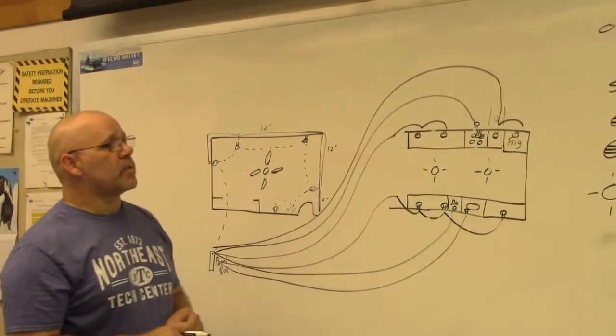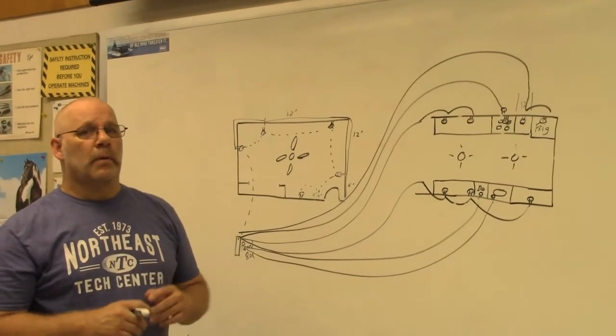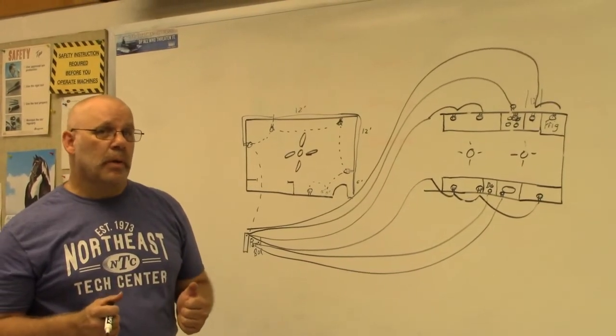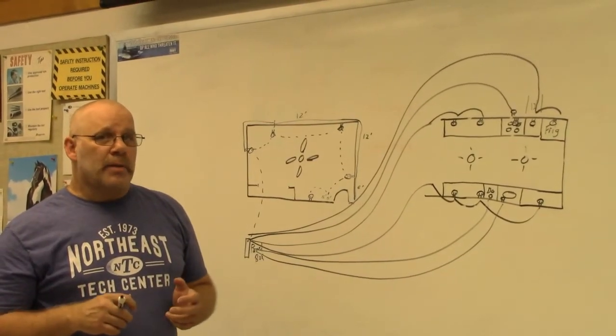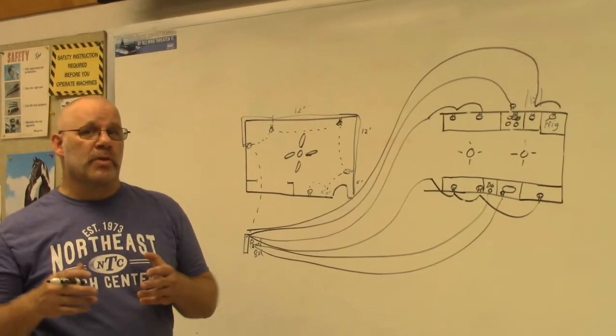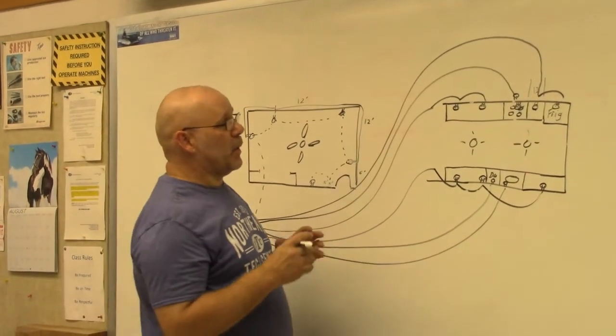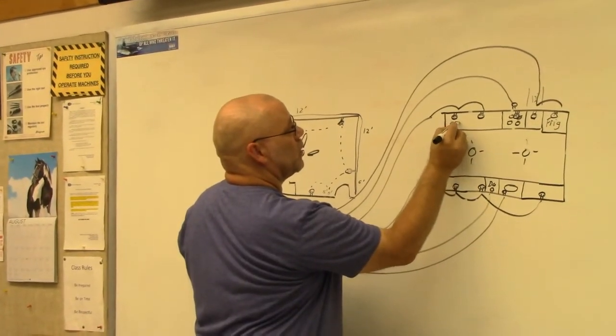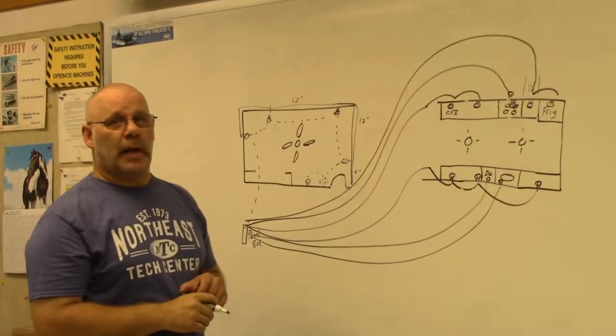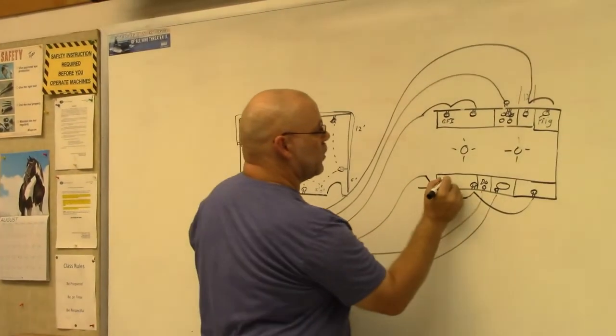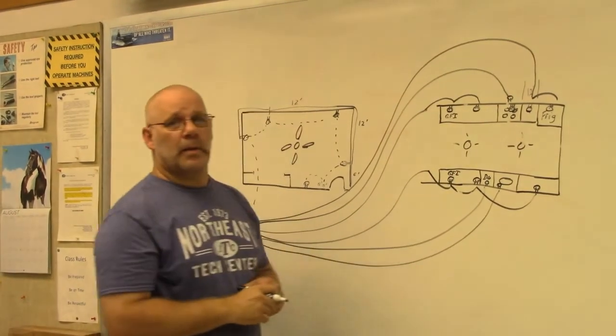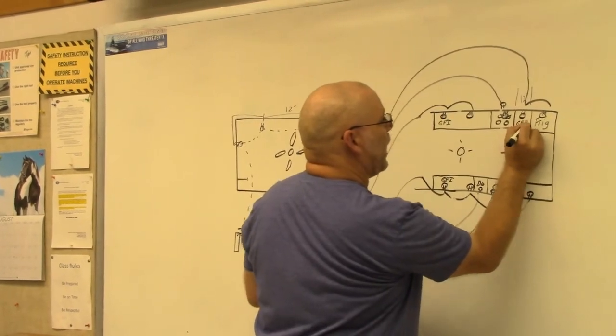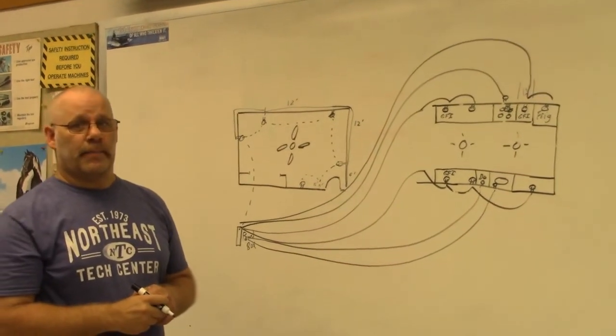Now, GFIs. Kitchen has to have GFIs because there's water in the kitchen. Where would the GFIs go? GFIs have to be on the first item of the circuit. So in my case, in my example here, this one would have to be a GFI. This one would have to be a GFI. This one would also have to be a GFI.